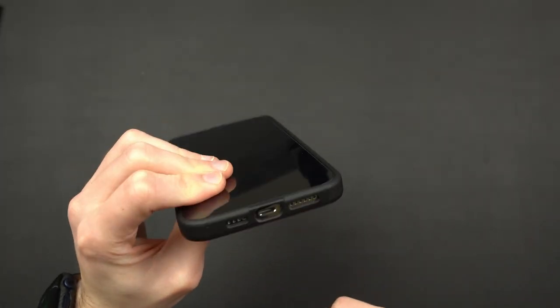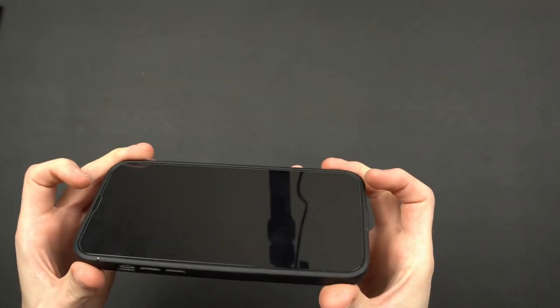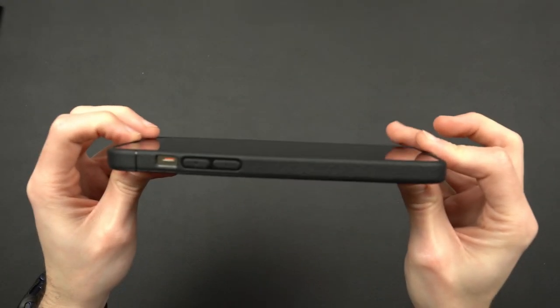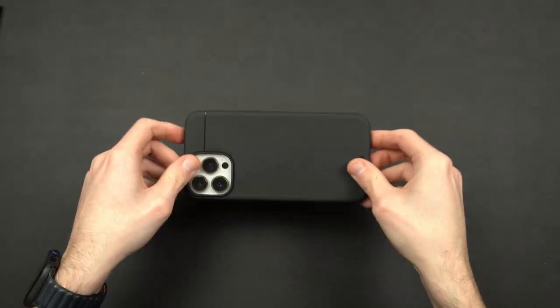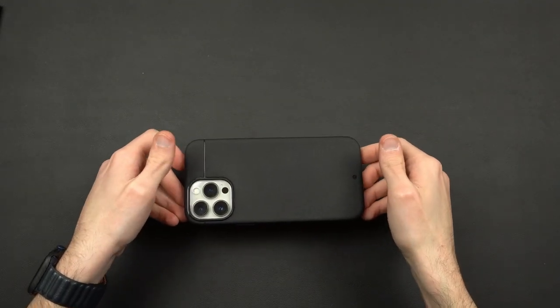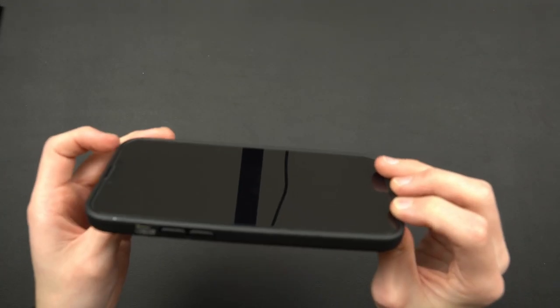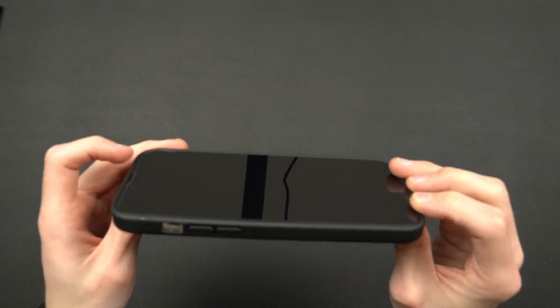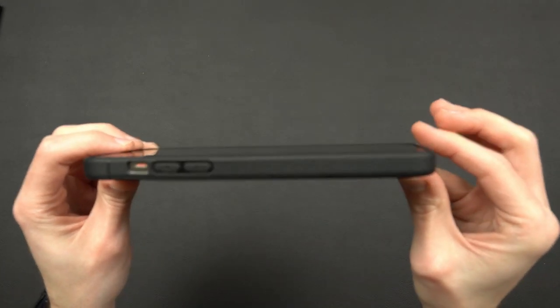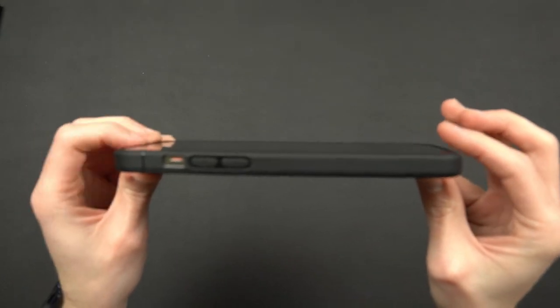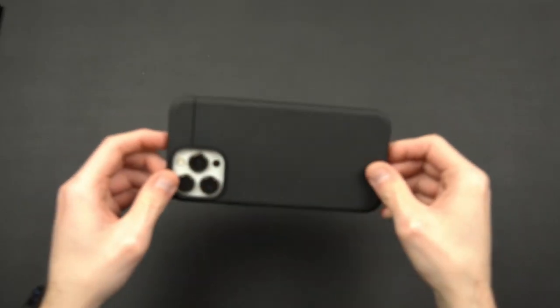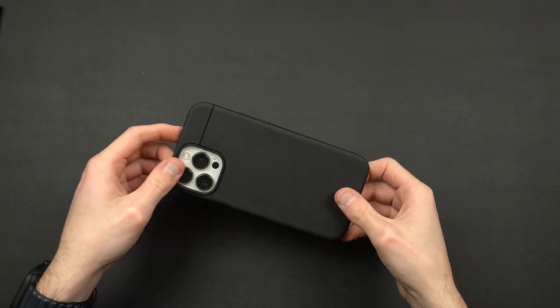The screen protection is really going to be minimal here. You're going to get a small lip that goes around, so if you set your phone face down it's not going to be touching the surface. But if you drop it, you're not going to get too much protection. I do have a tempered glass on here, so you can kind of see that the clearance is not that much. It's going to be a very faint lip, so you should be good to go laying it face down, but if it drops, not so sure about that.